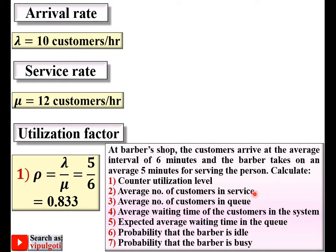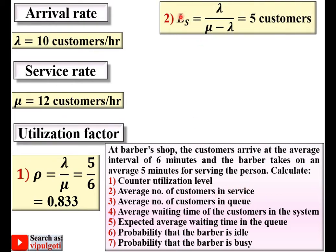Next, the average number of customers in the service. Remember: the number of customers is denoted by capital L and waiting time by W. Since this is in the system/service, it is denoted LS. Substituting lambda and mu into the LS formula gives the average number of customers in the system as 5.